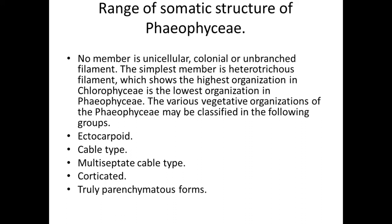The plant body of Macrocystis is nearly 30 to 50 meters long, dichotomously branched, with a holdfast and stipe, and a large leaf blade having a gas bladder present at the base of the plant body. The species Nereocystis is nearly 20 to 25 meters long, with a haptera, stipe, and a long gas bladder. Nereocystis also has a truly parenchymatous thallus.